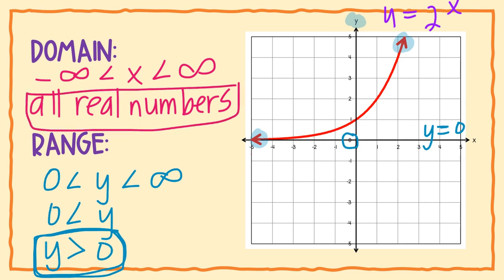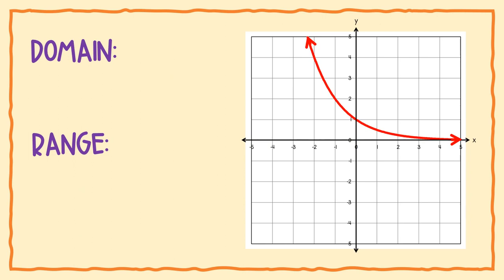Now let's look at the other parent function for exponentials — exponential decay, the one that goes down. Looking at domain, which is left to right on the x axis, both sides of the function have arrows, meaning it keeps going forever in both directions, so domain is all real numbers.